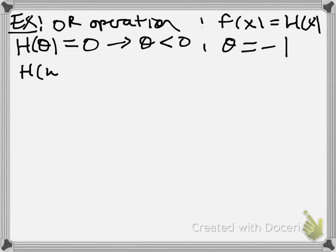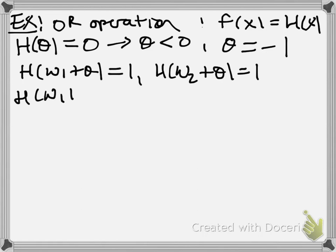And, we also need that h of w1 plus theta is equal to 1, because as long as one of the inputs is on, the output should be 1. Same thing with h of w2 plus theta. And, then h of w1 plus w2 plus theta is equal to 1.